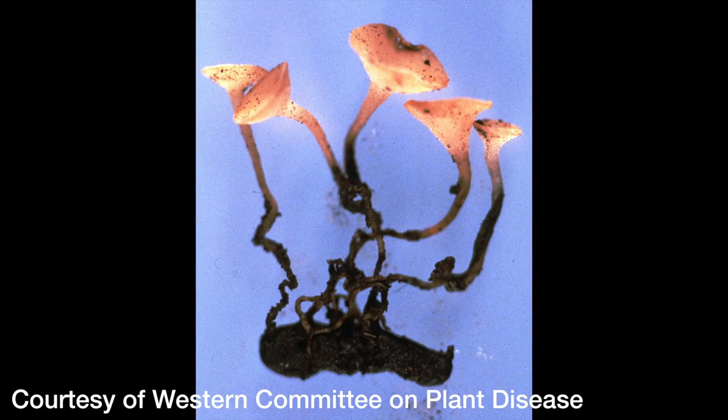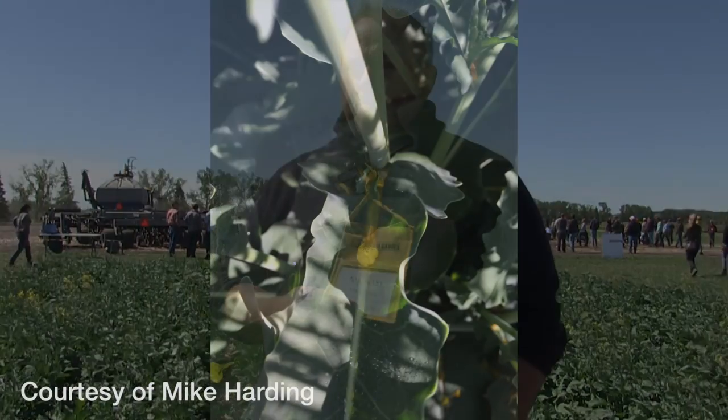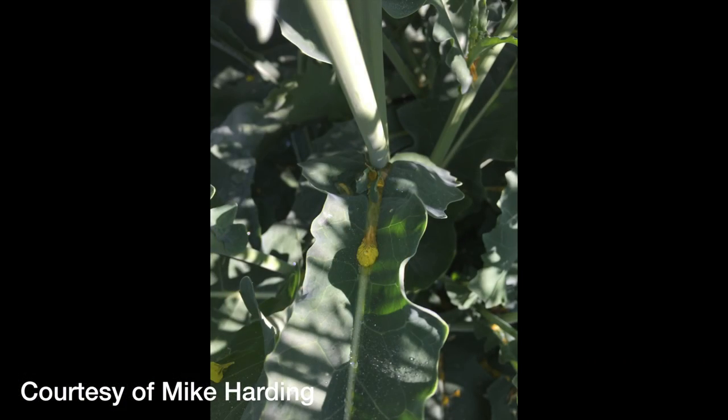So how can producers be scouting for it? What are the first signs of sclerotinia? Well for those who aren't faint of heart, you can scout for signs that the fungus is sporulating, but you have to crawl around on your hands and knees looking for tiny little mushroom structures that are formed. A better way to estimate the upcoming risk of sclerotinia is to use things like petal tests, and there are new tools available to help growers estimate the upcoming risk and need to spray.